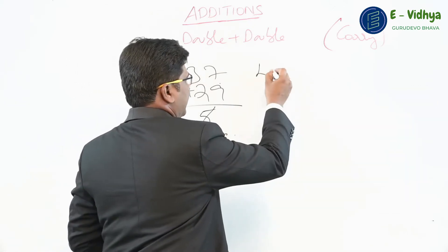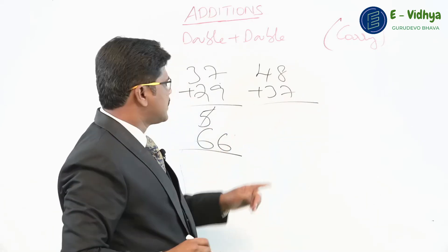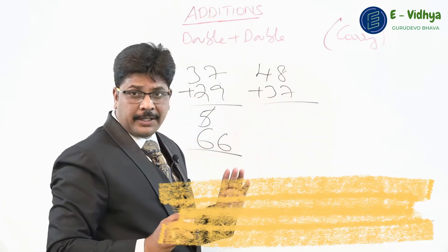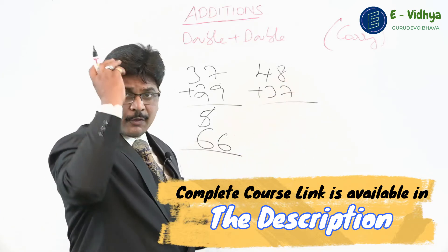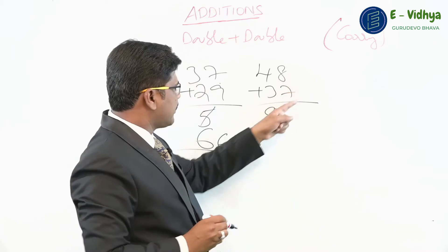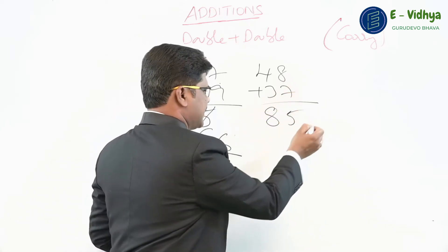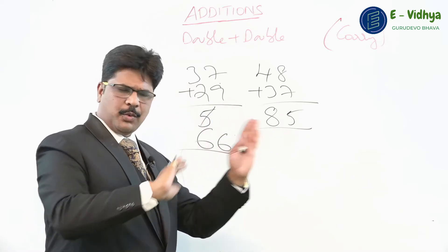Let us take one more problem: something like 48 plus 37, how much? Start from left, add 4 plus 3, that's 7, right. But don't write 7 there. Now, when you see the next place, it is a carry. Think one number more of 7, you get 8. Write 8 there. Now, end number of 8 and 7, how much you get? 5. That is the answer. No carries here in our Vedic mathematics. We just add from left to right.